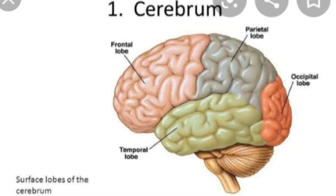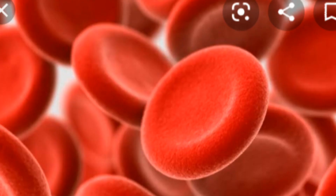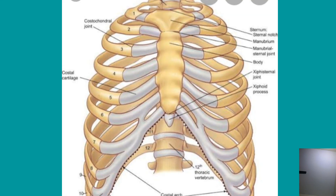The largest part of the human brain is the cerebrum. The amount of light entering the eye is regulated by the iris. The smallest cells in the human body are blood cells. The number of ribs in the human body is 24.